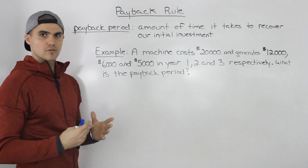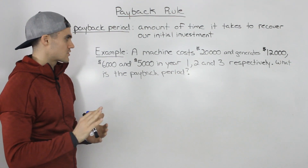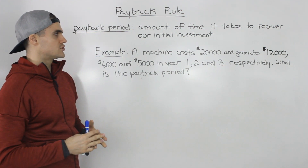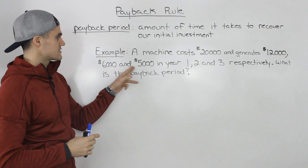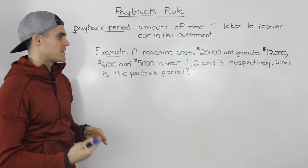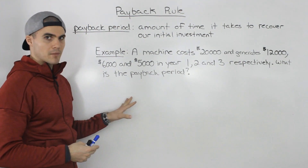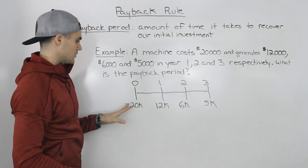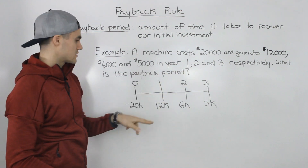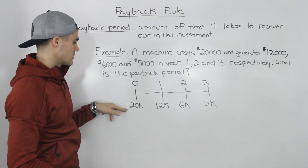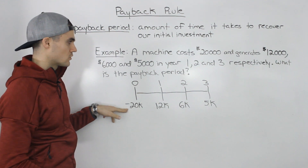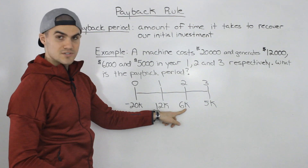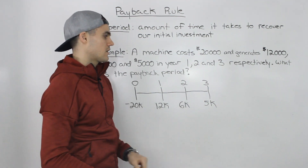Let's do another example with slightly more complex, uneven cash flows. A machine costs us $20,000 and it generates $12,000, $6,000, and $5,000 in years one, two, and three respectively. On the timeline, negative $20,000 at time zero, then $12,000 in year one, $6,000 in year two, and $5,000 in year three.